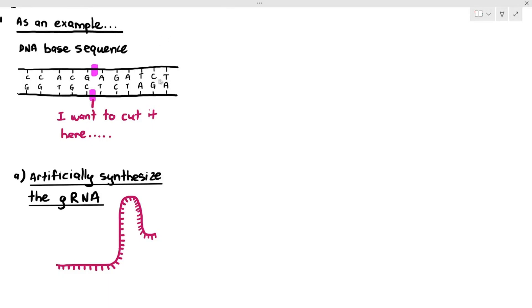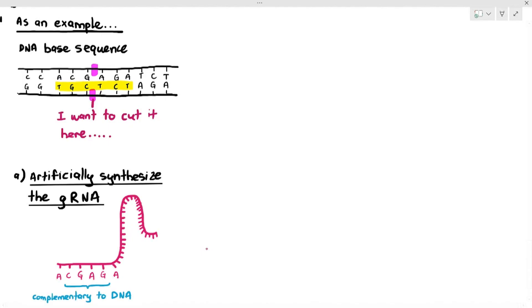Now, look at the sequence of the DNA that I've highlighted: T, G, C, T, C, T. What I have to do is I have to synthesize a gRNA. And the gRNA has to have a sequence which is complementary to that highlighted DNA sequence. So if the DNA base sequence is T, G, C, T, C, T, the gRNA sequence has to be A, C, G, A, G, A. A, C, G, A, G, A, which is complementary to the DNA. Now, you might be thinking, what about those other sequences which I am circling right there? We don't have to care about that, okay? We just have to know that the gRNA needs to be complementary to the DNA sequence that you want to cut.